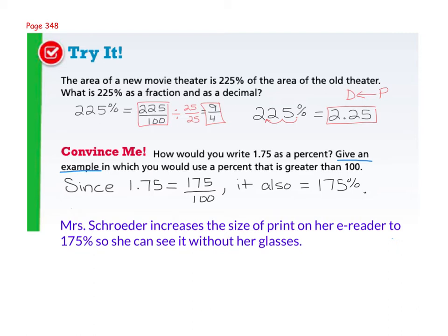If you have 1.75 and you want to change it to a percent, move the decimal point two spaces to the right or start by putting it over 100. As for an example, here's mine. I said Mrs. Schroeder increases the size of her print on her e-reader to 175% so she can see it without her glasses.